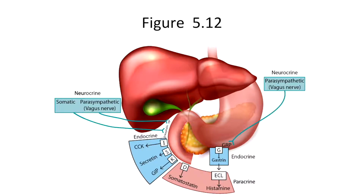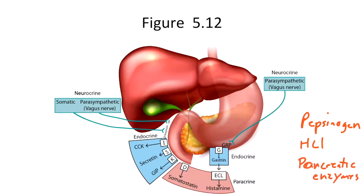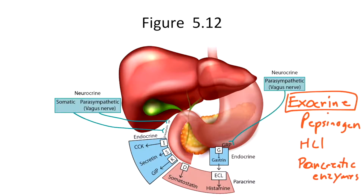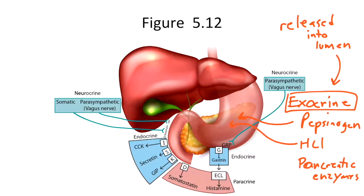Before we get into each one of these, understand that the substances discussed in sections one and two of this chapter, such as pepsinogen and acid from the stomach, as well as the enzymes released from the pancreas, are all exocrine. Exocrine means they are released directly into the lumen — for example, pepsinogen and acid are released into the stomach, and pancreatic enzymes are released into the duodenum.